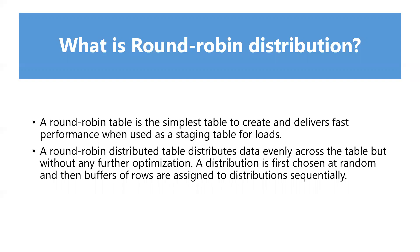So if we are loading data into a staging table, round robin is the best distribution. If we are loading data into a large table that has a lot of joins — for example a fact table — then hash distribution is the best choice.